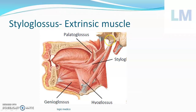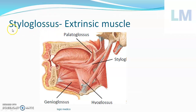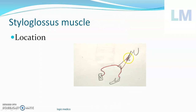Styloglossus originates from the styloid process, which is a bone just below the external auditory meatus of the temporal bone. There is a pen-like process called the styloid process — like the tip of a pen — and it goes to the lateral margin of the tongue. So styloid process to the tongue: 'glossus' means tongue and 'stylo' means styloid process. The location of this muscle is within the oral cavity, between the tongue and the styloid process.